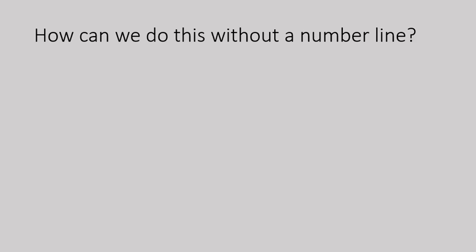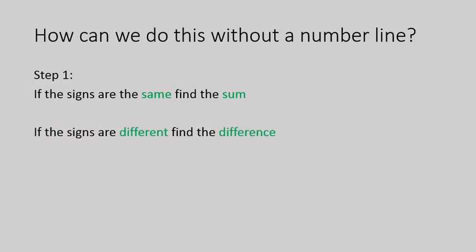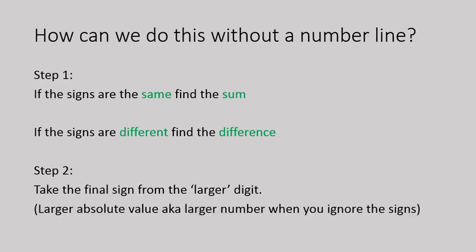So to do this without using a number line, just like adding other numbers, we follow the same exact rules. If the signs are the same, we add them, or we find the sum. If the signs are different, then you find the difference, or you subtract them. Now, if you subtract them, you take the final sign from the larger digit. And I put larger in a little quotation there because it doesn't necessarily mean larger. It's technically the larger absolute value or the larger number when you ignore the signs. And we'll see examples of that in just a second. Let's do this.